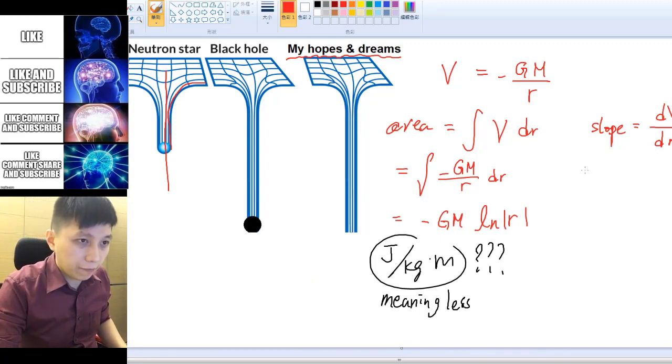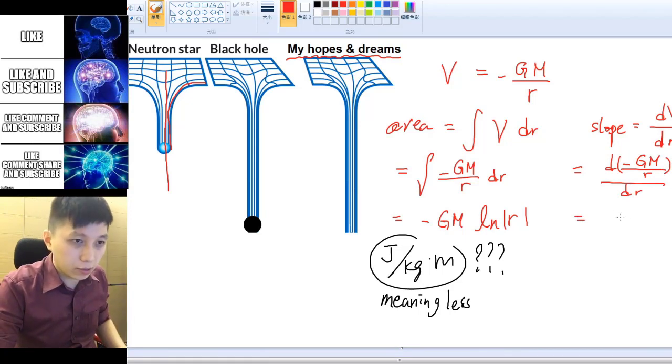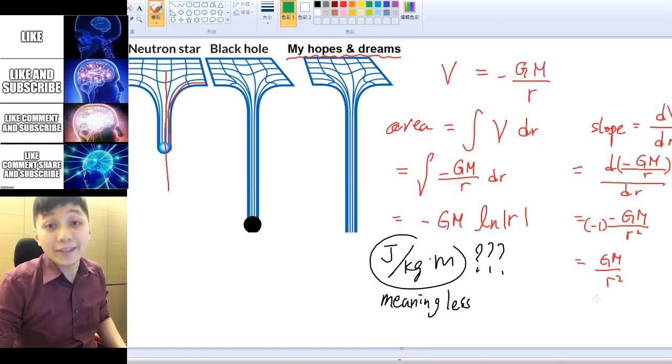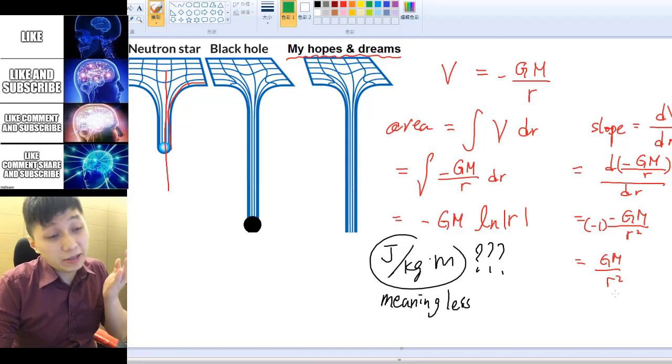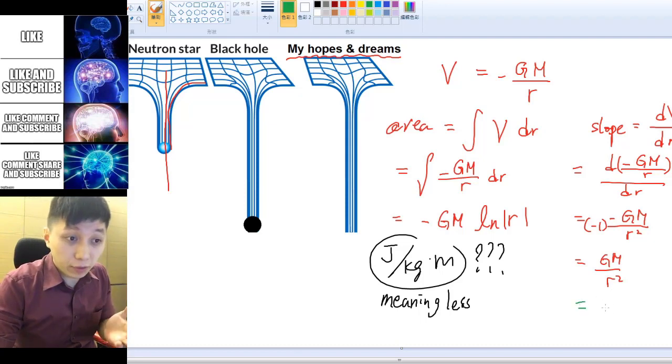Now let's think about the slope. For the slope then we again change the expression of V into negative GM over R. So we are going to differentiate this with respect to R. And as you know it's going to be GM negative as a constant and the R below become R square and you got a 1 negative again and so eventually you got GM over R square. Looks familiar. Yes this is simply the gravitational field strength you learn.